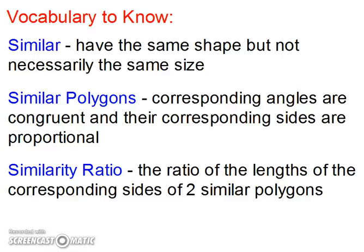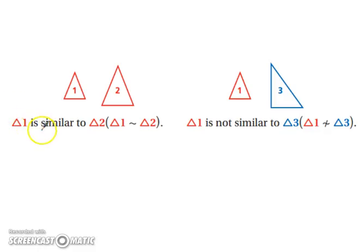Let's look at how to write these. Triangle 1 is similar to triangle 2, so we would write that as triangle 1 with a squiggle, triangle 2. Triangle 1 is not similar to triangle 3, so triangle 1 is not similar to triangle 3. Very similar to not equal, where you throw a line through it. Same thing here, throw a line through it and it's not similar.